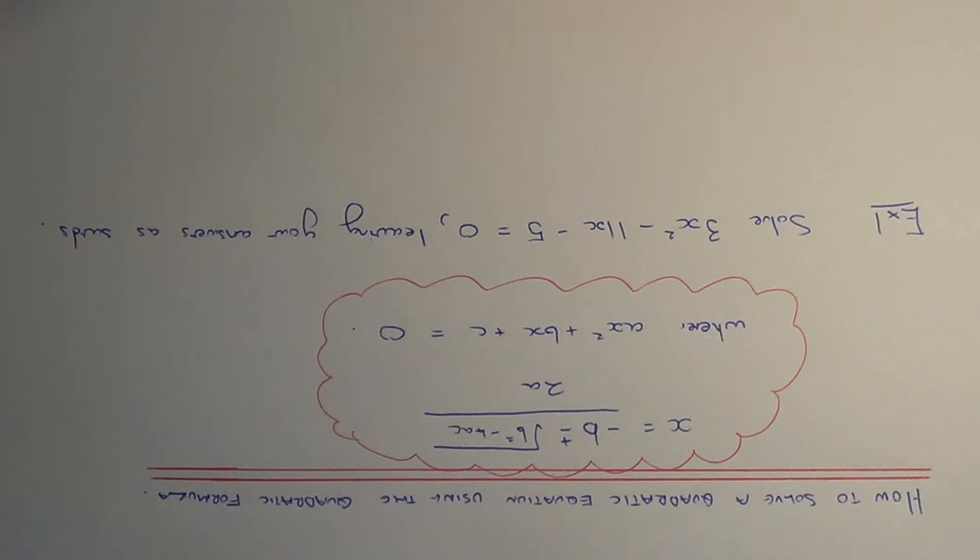Let's have a look at example 1. We need to solve the equation 3x squared minus 11x minus 5 equals 0, and the answers need to be left in surd form.